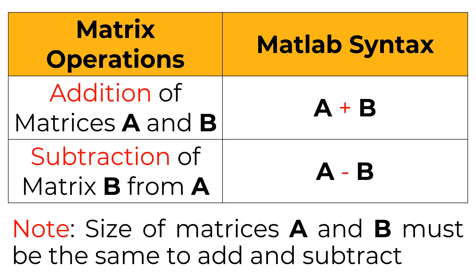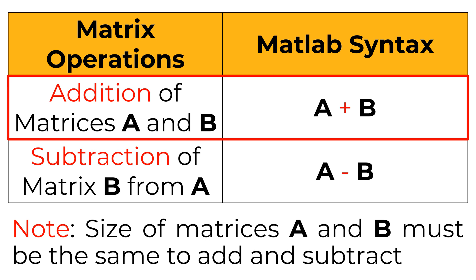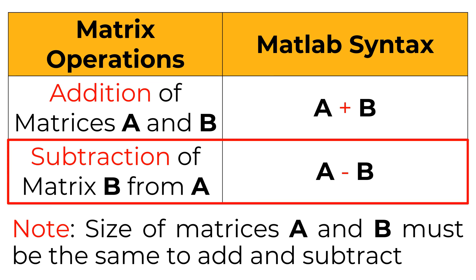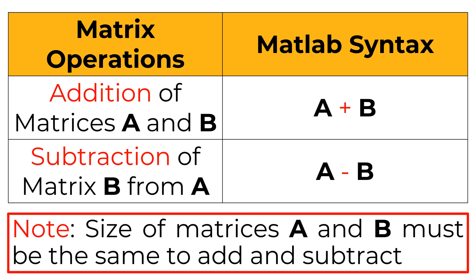Consider the same size matrices A and B. If you want to add matrices A and B, you can use the plus sign between A and B in Python. Similarly, you can use the minus sign between A and B if you want to subtract matrix B from A. Remember, the size of matrices A and B must be the same to add or subtract, otherwise it will give you an error message. The resulting matrix size is the same size as matrix A or B.